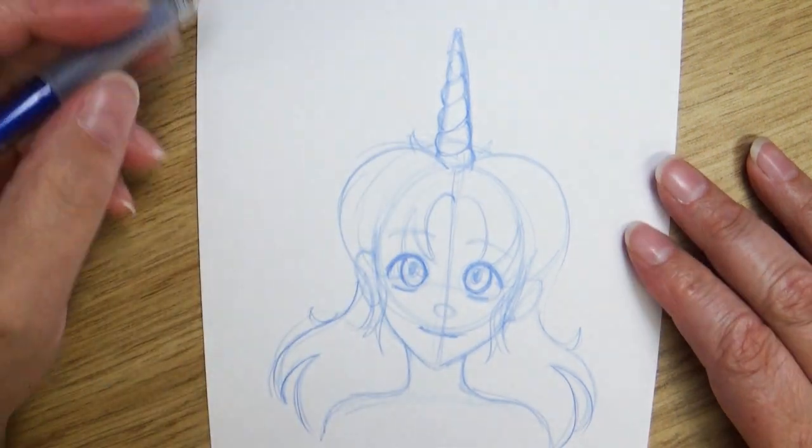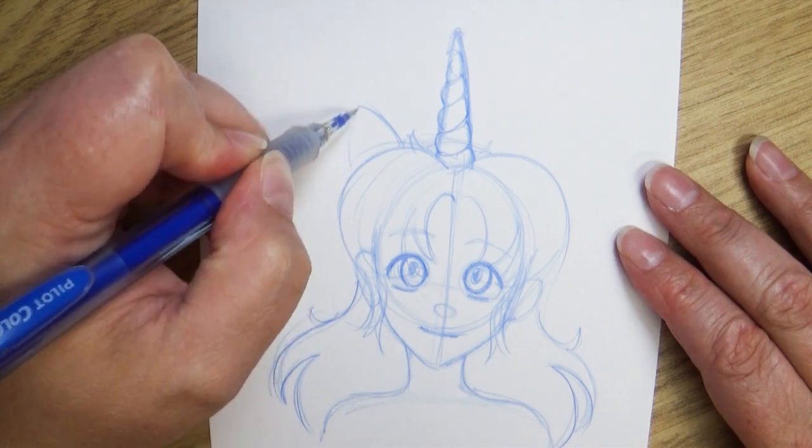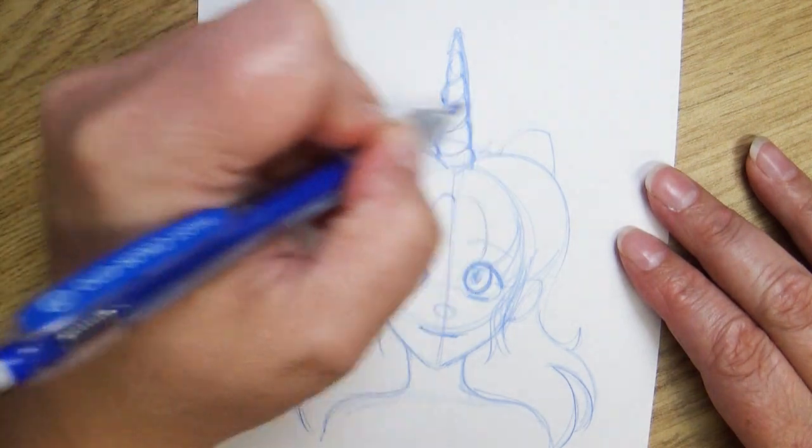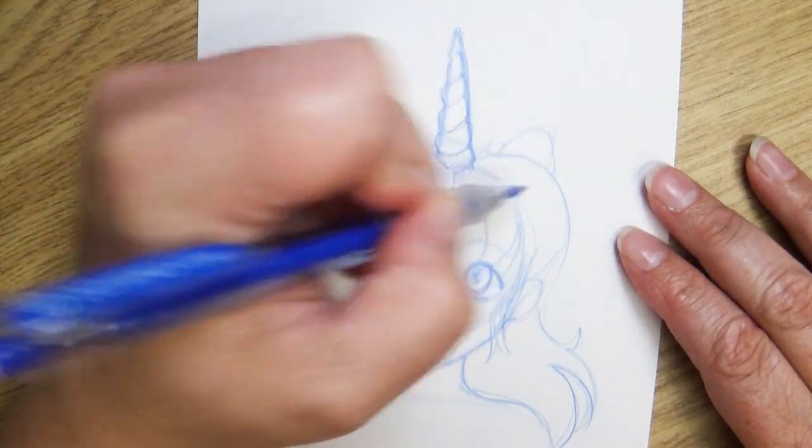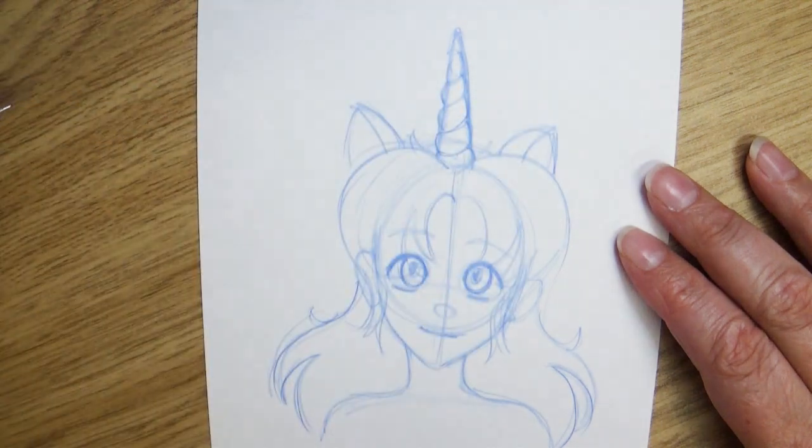Now as I said before I wanted to give her kind of like ears like a headband. I saw these when I was at Comic Con they're really cute they're little headbands with unicorn horns on them and so I'm just going to place some ears in there making sure they're roughly about the same size. One ear is a little bit bigger than the other but that's okay.